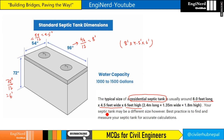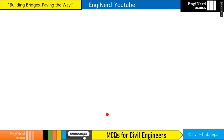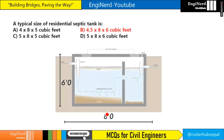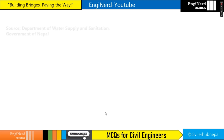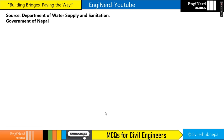Note that the septic tank may come in different sizes, but best practice is to find and measure your tank for accurate calculations. So our answer is Option B: 4.5 by 8 by 6 cubic feet.